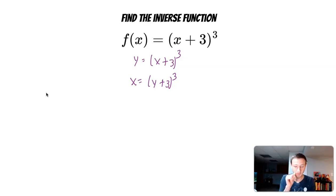And then we solve for y. So we are going to take the cube root of both sides, because I have that y plus 3 underneath that exponent of 3. So to undo the exponent of the 3, I want to take the cube root. So I'm going to have the cube root of x equals y plus 3.